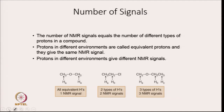The first feature is number of signals. The number of NMR signals equals the number of different types of protons in a compound. If there are four different kinds of protons, you expect four different signals. Protons in different environments are called non-equivalent protons and give different NMR signals, whereas protons in the same environment are called equivalent protons and give the same NMR signal.